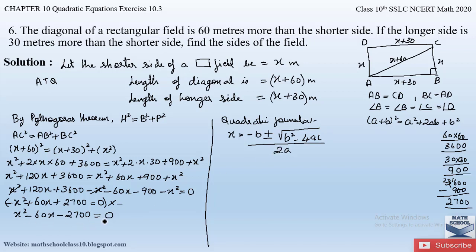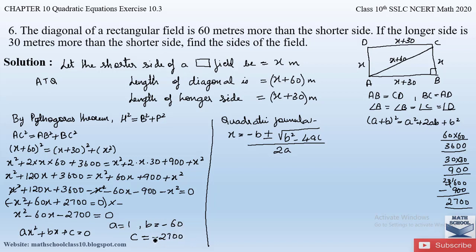Comparing x² − 60x − 2700 = 0 with the standard form ax² + bx + c = 0, we get: a = 1, b = −60, and c = −2700. Now let us substitute these values into the quadratic formula.